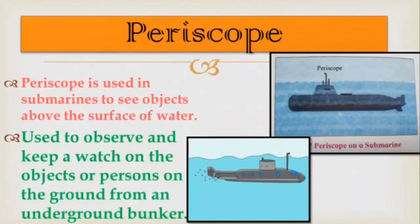Kaleidoscope and periscope both use the properties of reflection of light. Students, here we have finished this lesson. We will meet again in the next chapter. So take care. Bye, students.